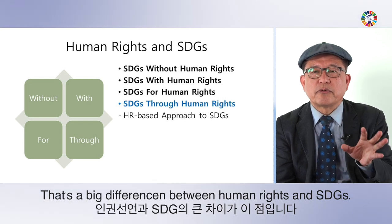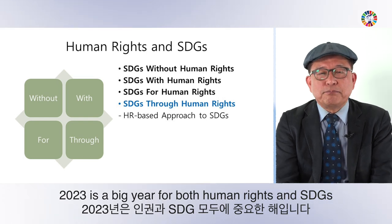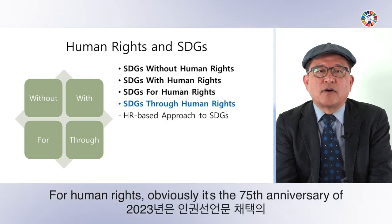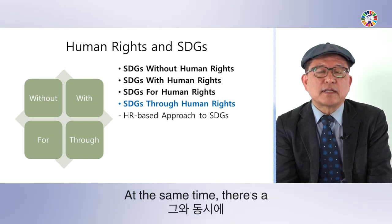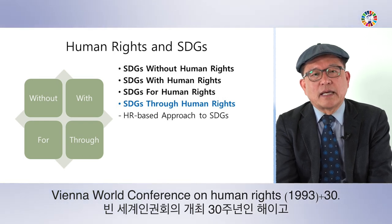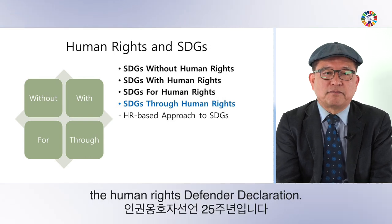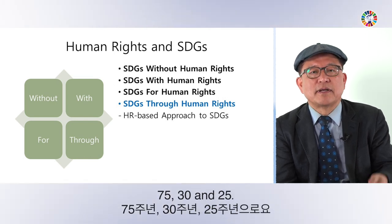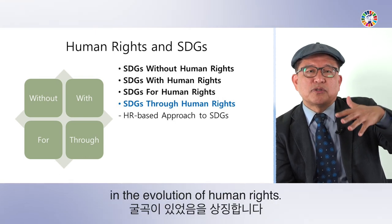2023 is a big year for both human rights and SDGs. For human rights, it is the 75th anniversary of the Universal Declaration of Human Rights. At the same time, the Vienna World Conference on Human Rights was 1993 — that's plus 30. And 1998 saw the UN General Assembly adopt the Human Rights Defenders Declaration — so triple anniversaries: 75, 30, and 25.